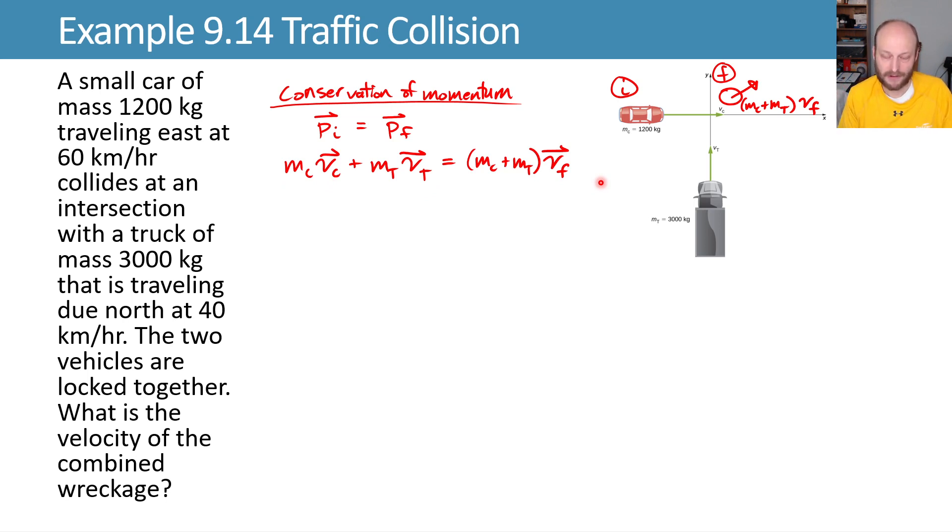Now we'll consider the x components. And initially, only the car is going in the x direction. And then finally, there's some x component here. And we could try and do an unknown angle and do cosine of some unknown angle. That's fine if you want to. It might be easier to do what I'm proposing here, which is just say, okay, it has some x component of the velocity, and we'll solve for that as one of our unknowns.